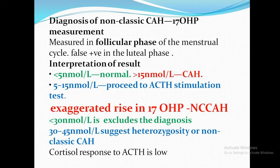To diagnose non-classical CAH, measure 17-hydroxyprogesterone in the follicular phase — measuring in the luteal phase gives false positives. If the level is less than 5, it is normal. If greater than 5, it suggests classical CAH. If between 5 and 15, suspect non-classical CAH and proceed to ACTH stimulation test. In the non-classical type, there is an exaggerated rise in 17-hydroxyprogesterone.